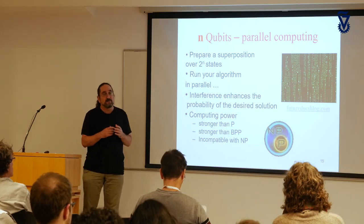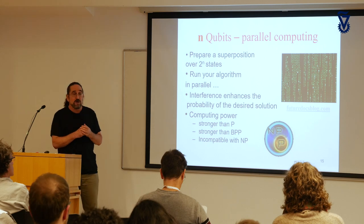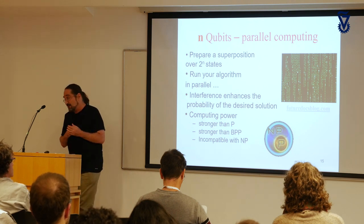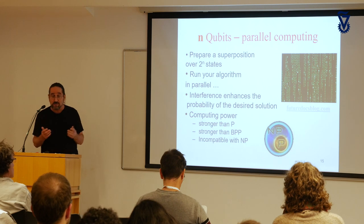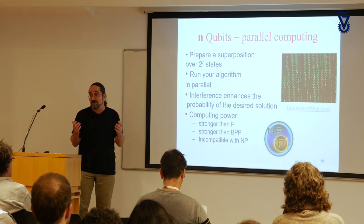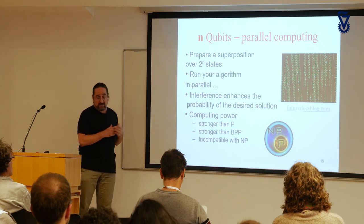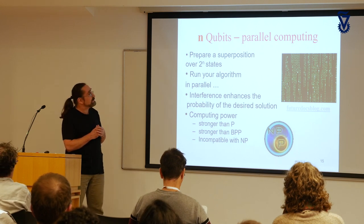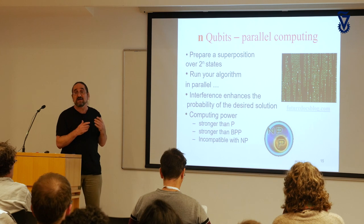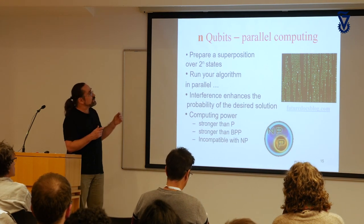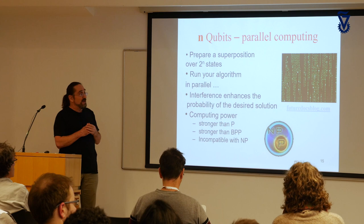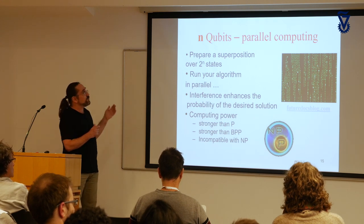Suppose we have a quantum computer working with n qubits. In one step, we get a superposition of 2 to the power n states. If you have a quantum computer of just 50 qubits, by applying the Hadamard gate to each qubit in one step, we get a superposition of 2 to the power 50 different states. Then in parallel, we can run the algorithm on all these states — classical computers cannot do this.